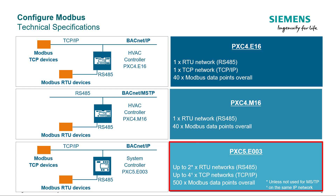PXC5: The system controller comes with larger possibilities of integrating the Modbus protocol. Since the PXC5 has two RS-485 connectors onboard, both of them can be simultaneously used for RTU networks, unless one of them is used for MSTP integration. For TCP/IP devices, it is possible to configure up to four Modbus networks under one main IP network with different ports.